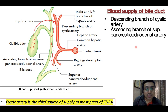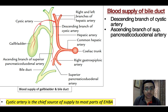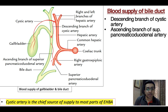This diagram shows the blood supply of the gallbladder and bile duct as a whole. The cystic artery is the chief source of supply to most parts of the extra-hepatic biliary apparatus. For the bile duct specifically, it is supplied primarily by two arteries: the descending branch of the cystic artery and the ascending branch of the superior pancreaticoduodenal artery. The branches will be covered in detail with the celiac trunk topic.